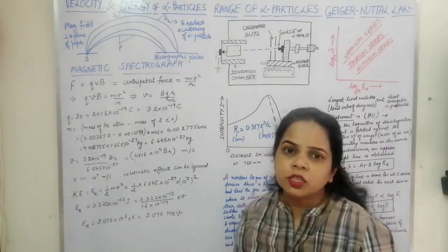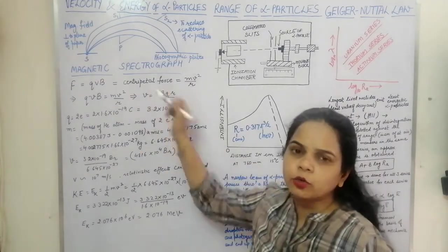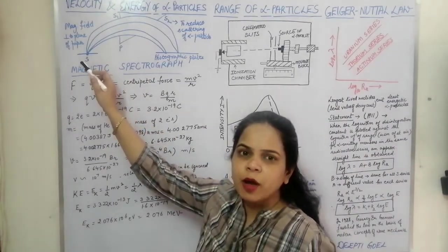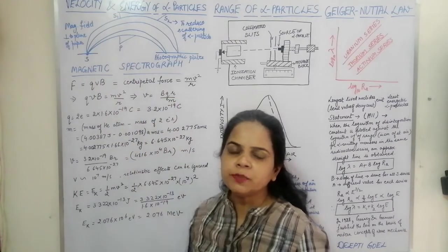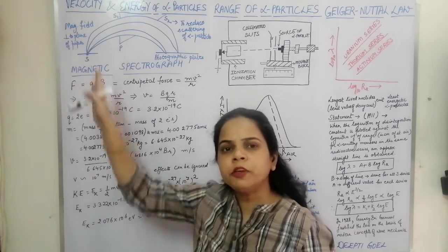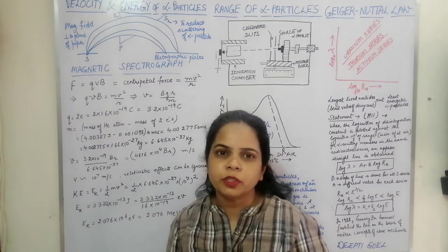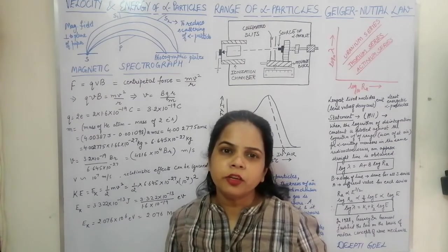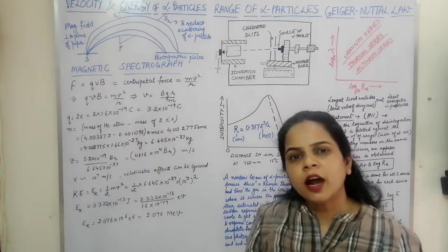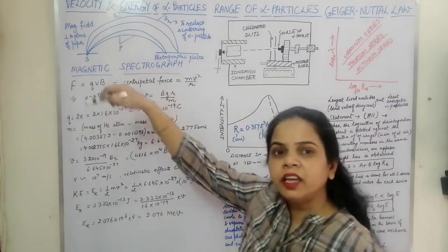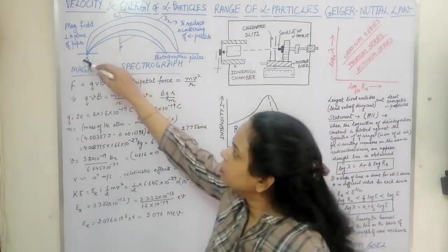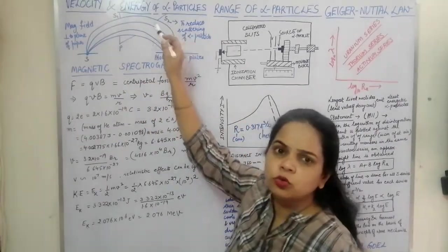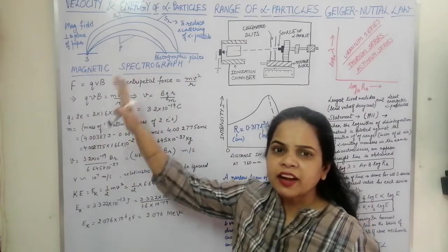To calculate the velocity, we use an instrument called the magnetic spectrograph. In it, we have a source S which emits alpha particles. The magnetic field is applied perpendicular to the plane of paper. When a charged particle moves in a perpendicular magnetic field, it deflects and traces a circular path. Slits S1 and S2 are placed to collimate the beam and minimize scattering.